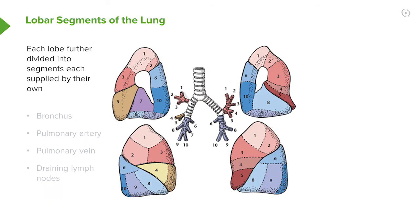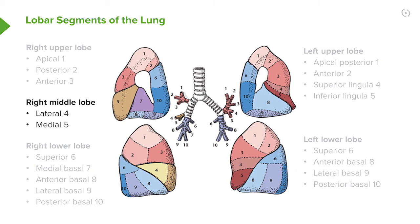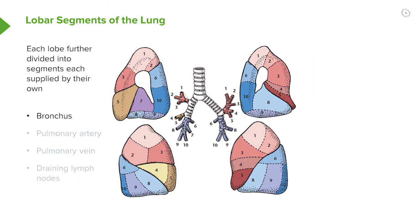Once the bronchi reach one lobe of the lung, they will then divide, and there are segments for each lobe. Here's a diagram showing each of the segments. They vary in number depending on which lobe — the smaller lobes, such as the right middle lobe, only having two segments, and the larger lobes, such as the lower lobe, having four or five segments. Each of those segments has an individual bronchus feeding into it, and accompanying that bronchus there is an individual pulmonary artery, pulmonary vein, and draining lymph nodes as well.